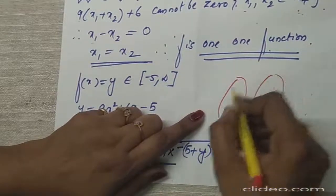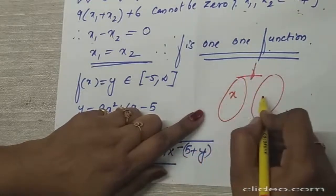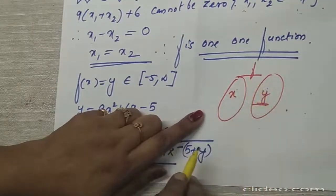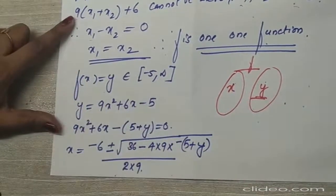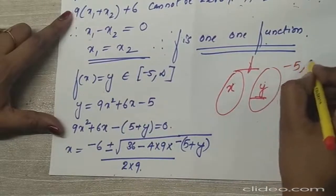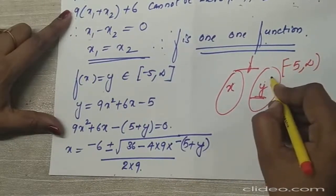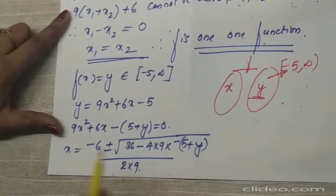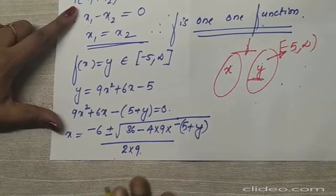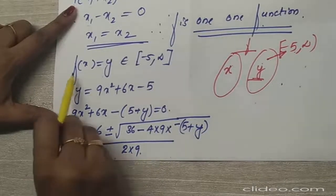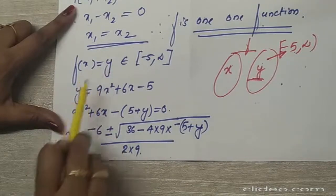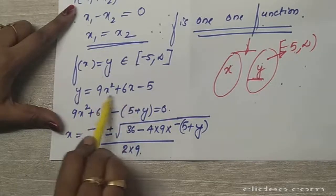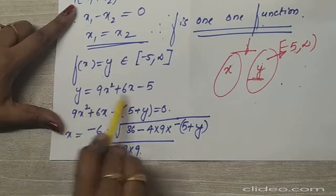Here f(x) = y and y belongs to [-5, ∞). The codomain is the collection of numbers starting from -5 up to infinity. I will change the dependency by writing y = 9x² + 6x - 5, then find the value of x by applying the quadratic formula.